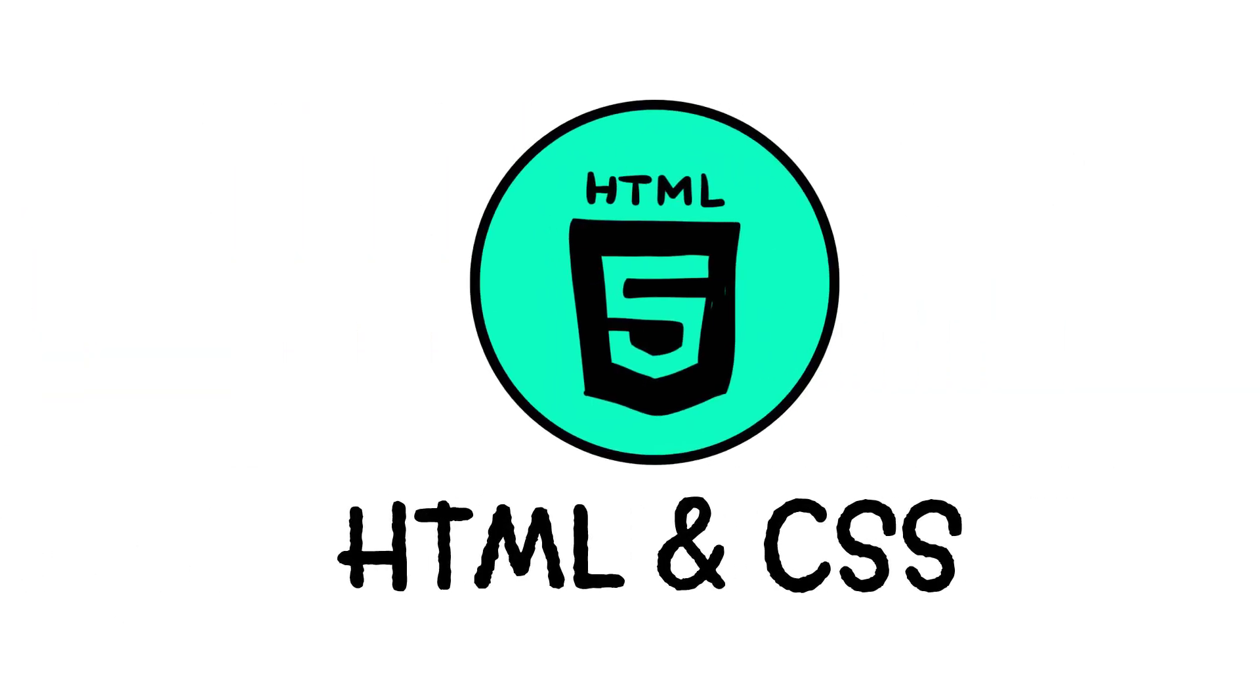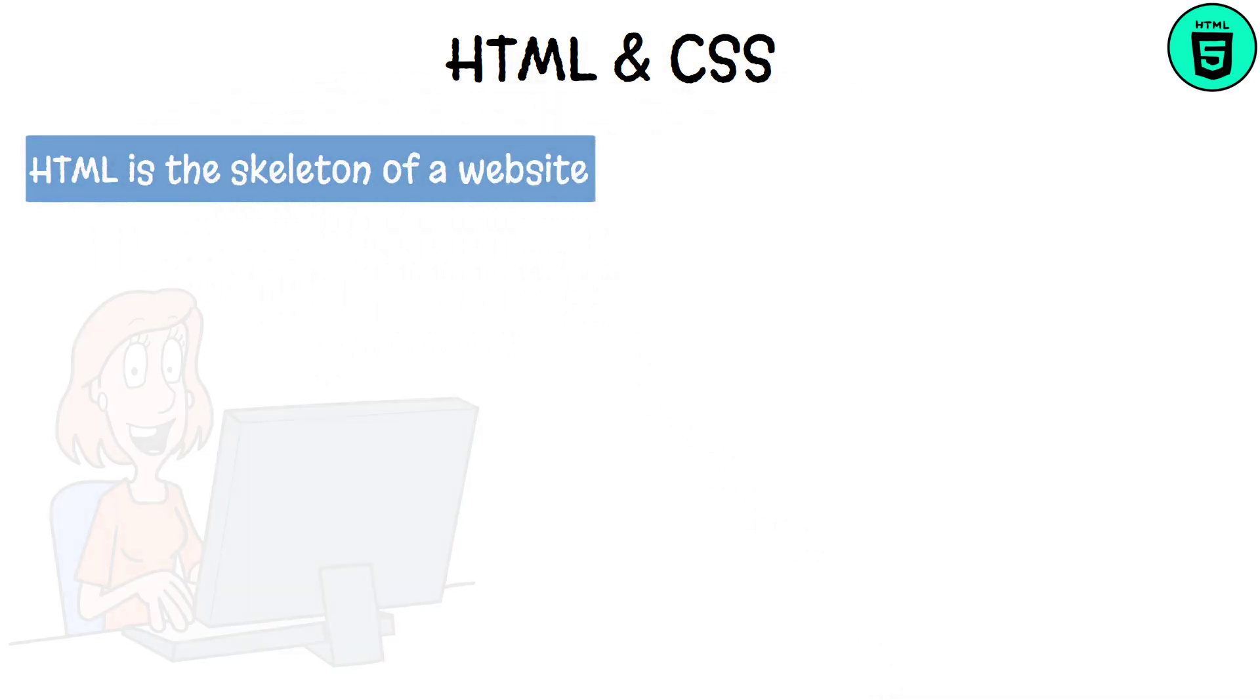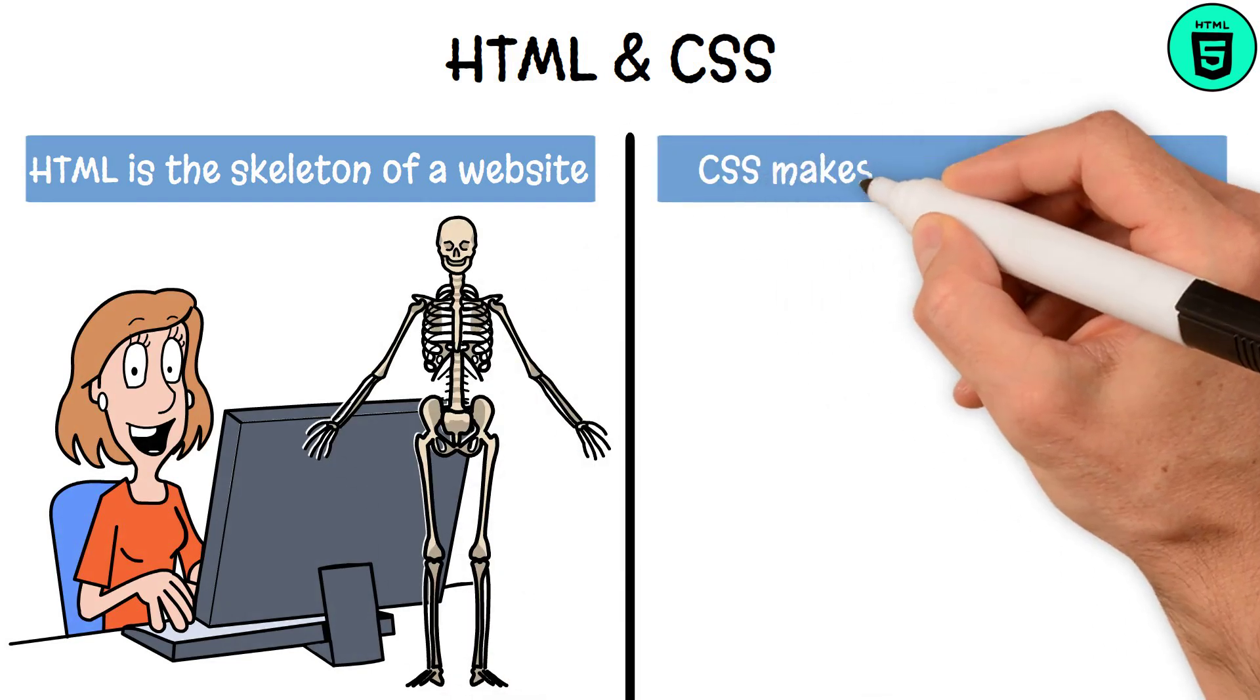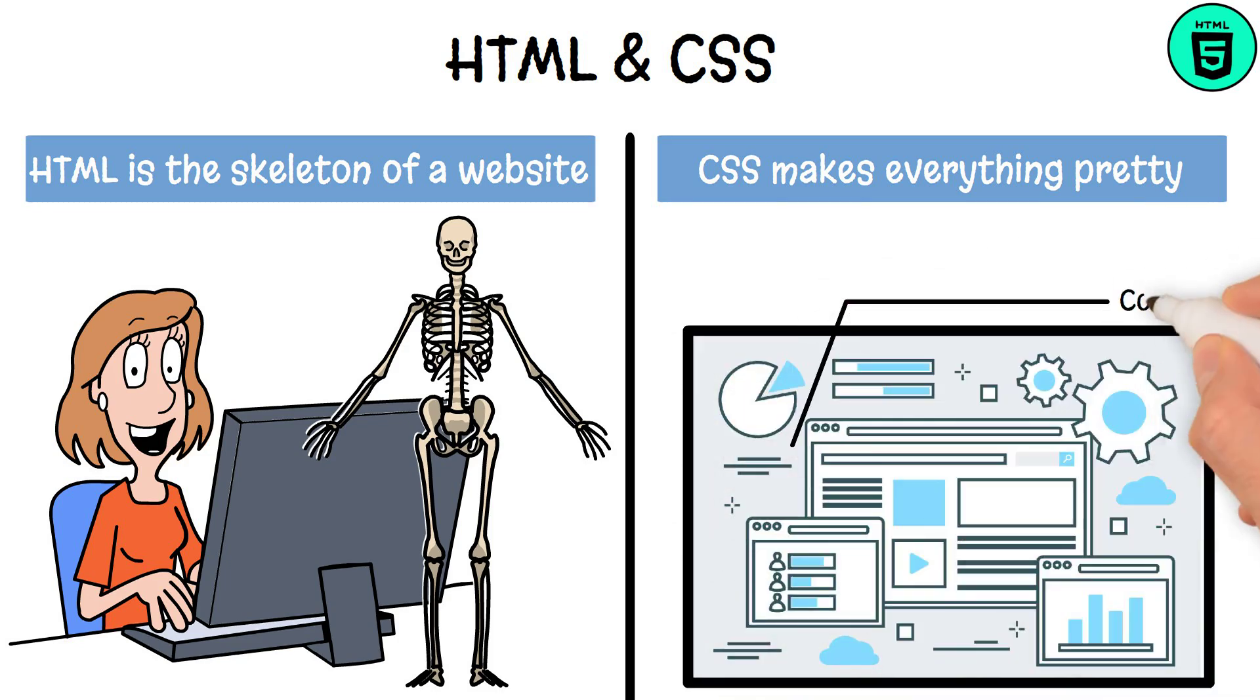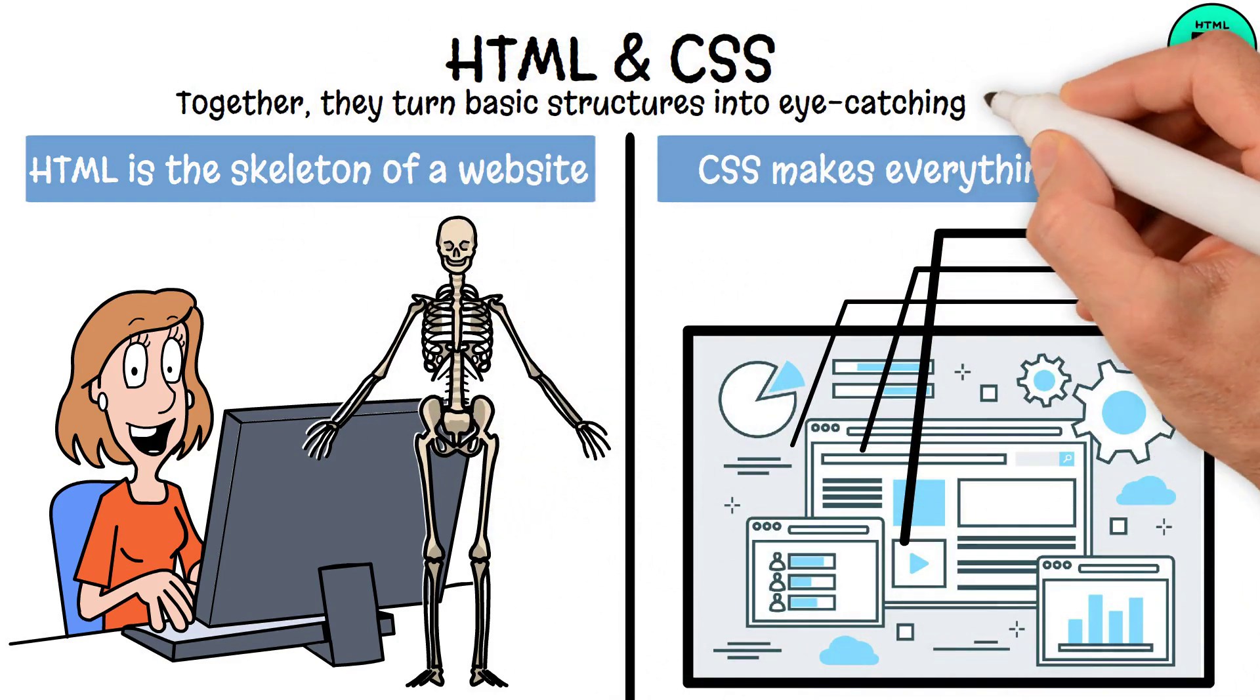HTML and CSS. HTML is the skeleton of a website. It supports everything you see online, just as bones support your body. CSS makes everything pretty, dressing up the website in the latest styles by adjusting colors, sizes, and even adding flair with animations. Together, they turn basic structures into eye-catching pages.